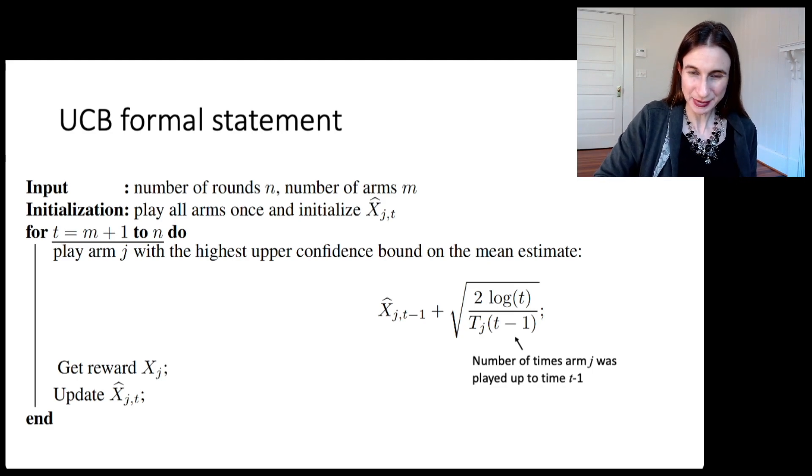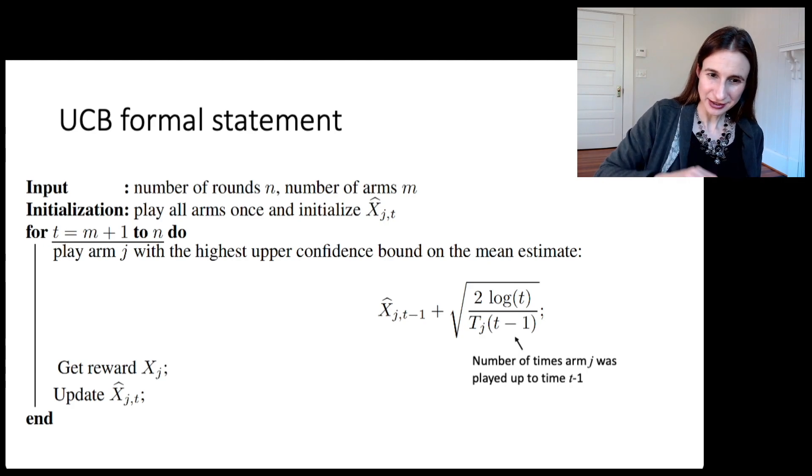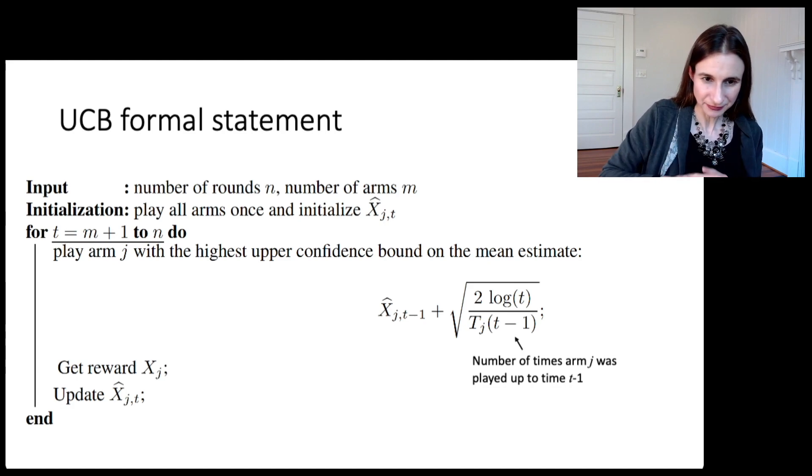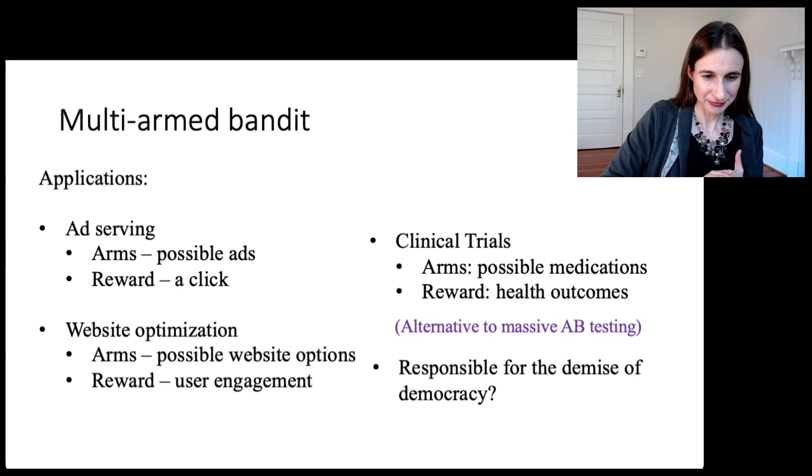And this is the formula for the upper confidence bound here. The formula for the denominator there, T_J,T minus one, that's just the number of times we've played arm J up until now. And then after you figure out which arm to play, you play that arm, you see the reward and then you update your estimate of the mean reward.